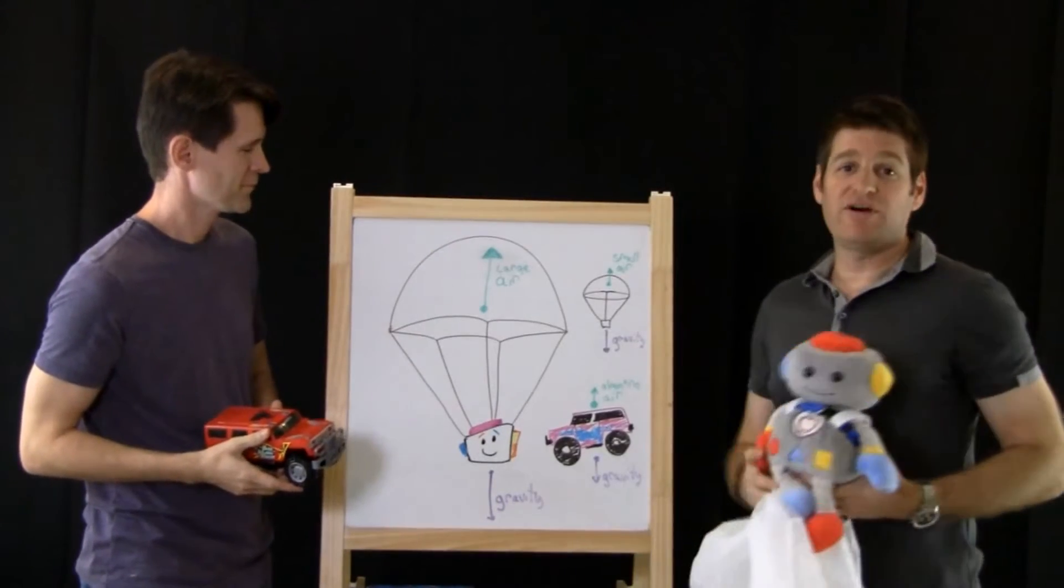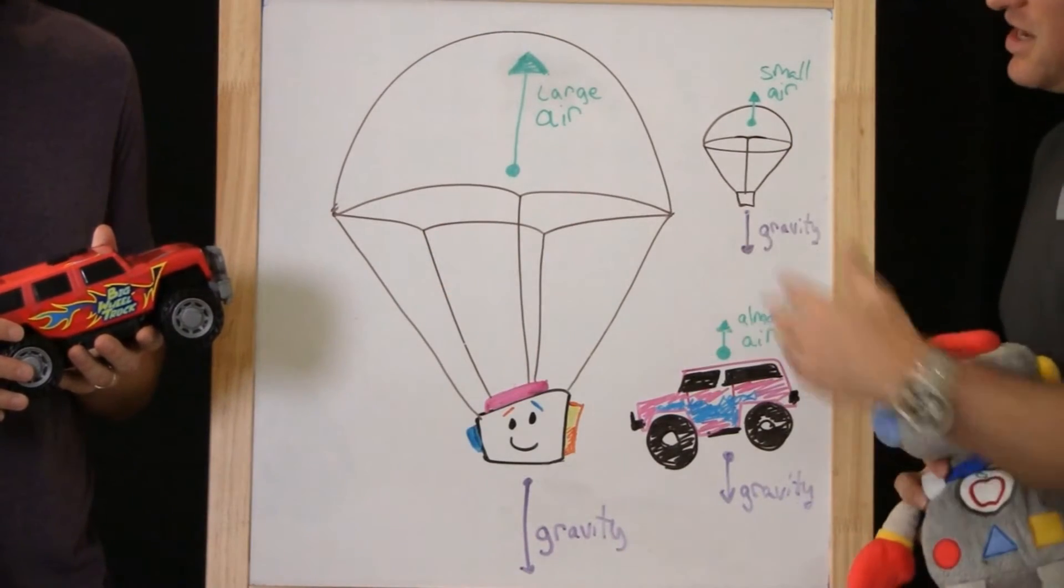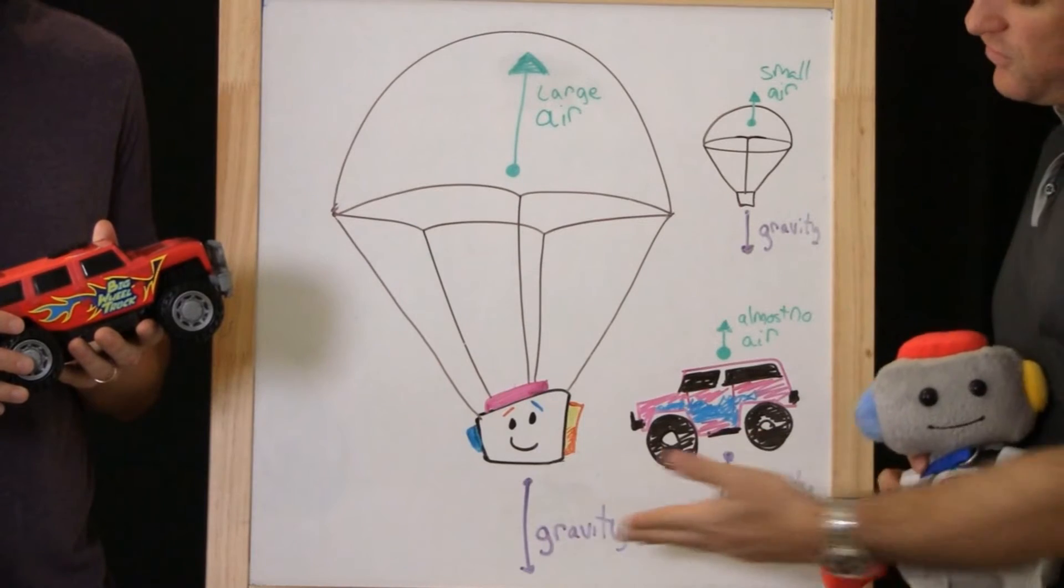So parachutes work off a theory called air resistance. The larger the parachute, the more air resistance. The air resistance counters the force of gravity.